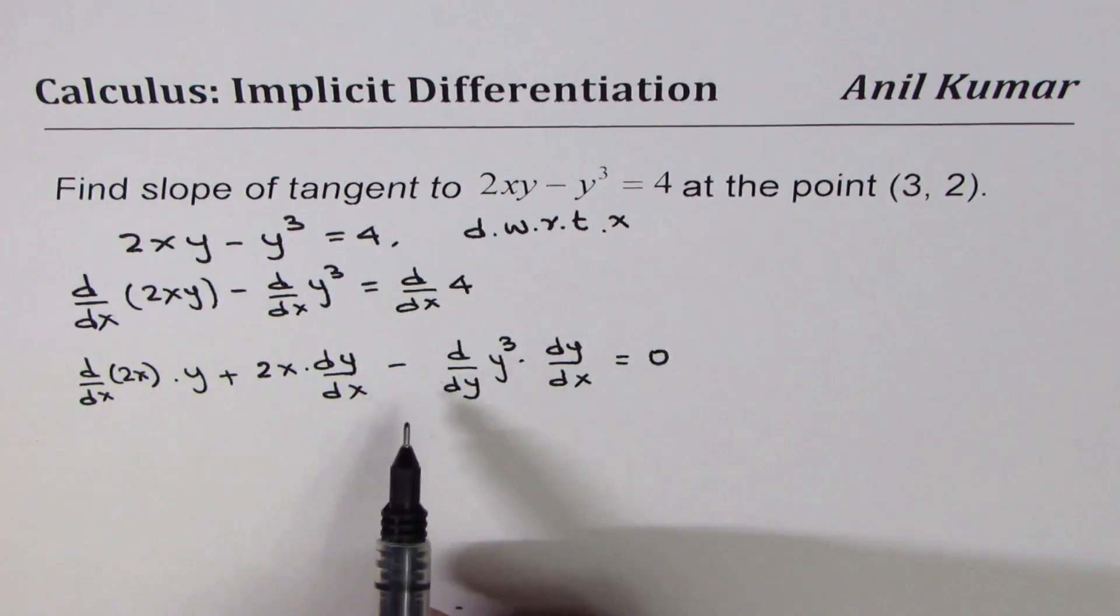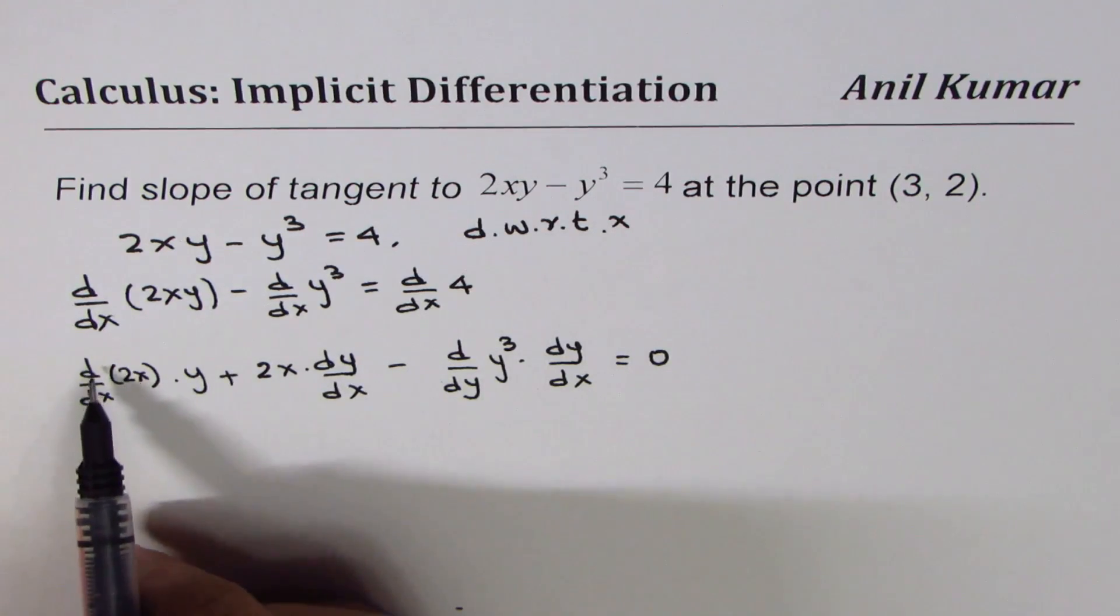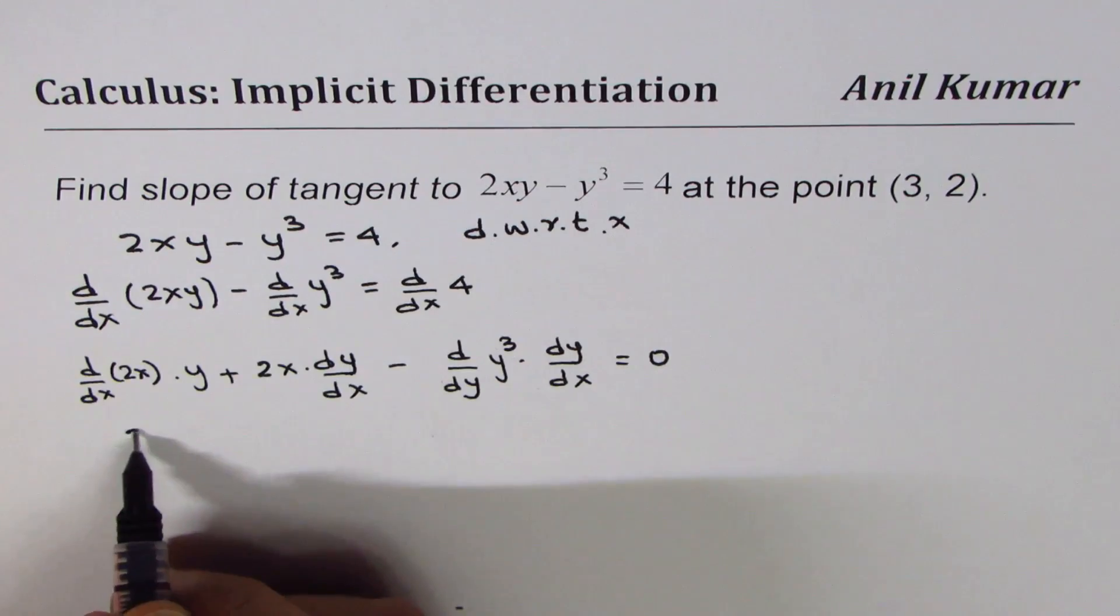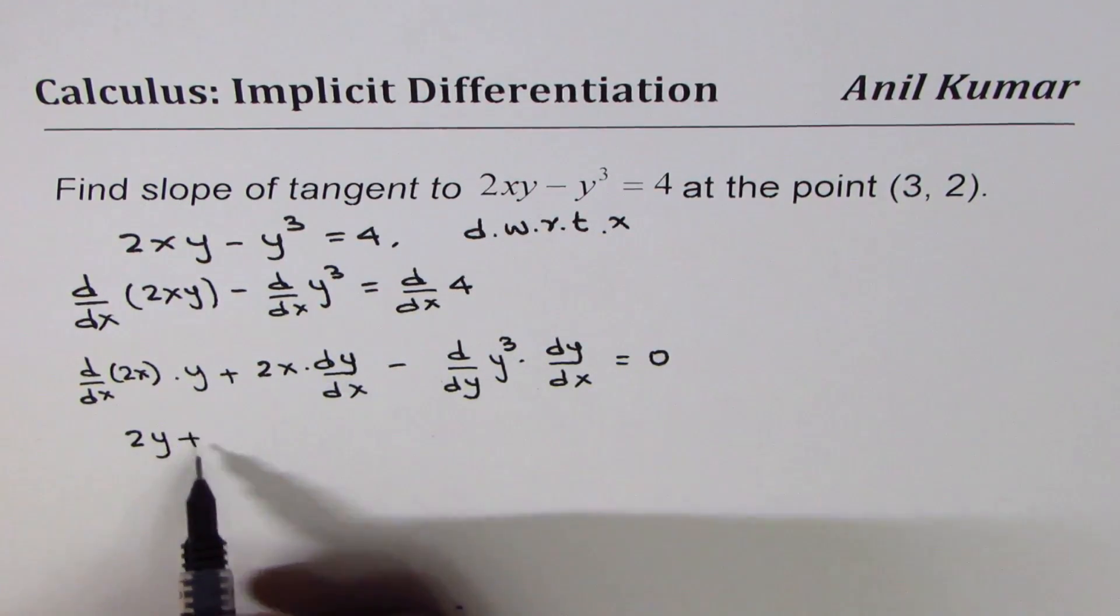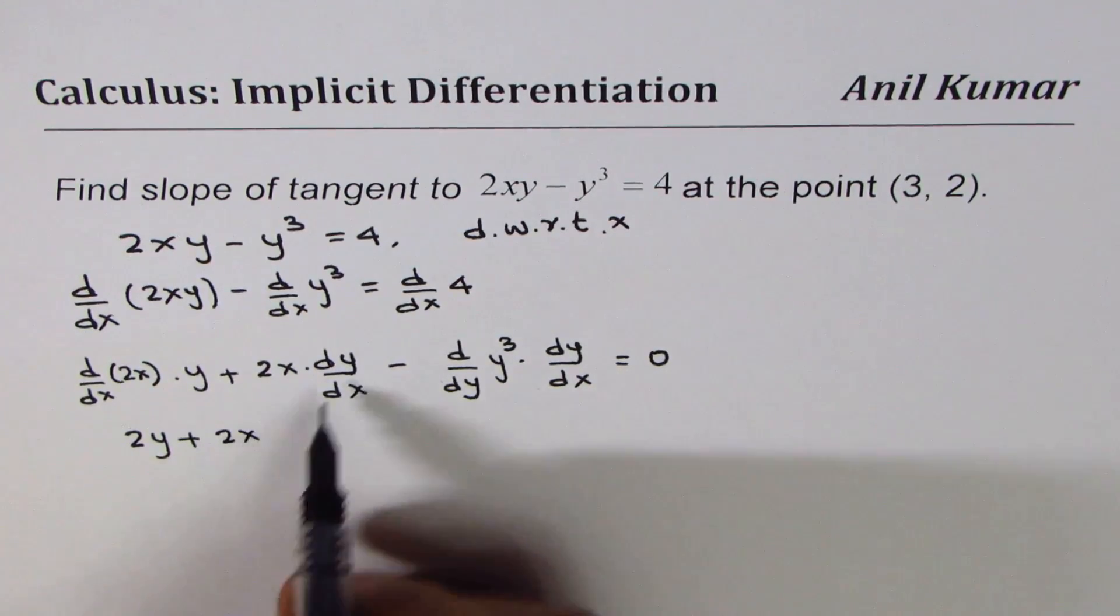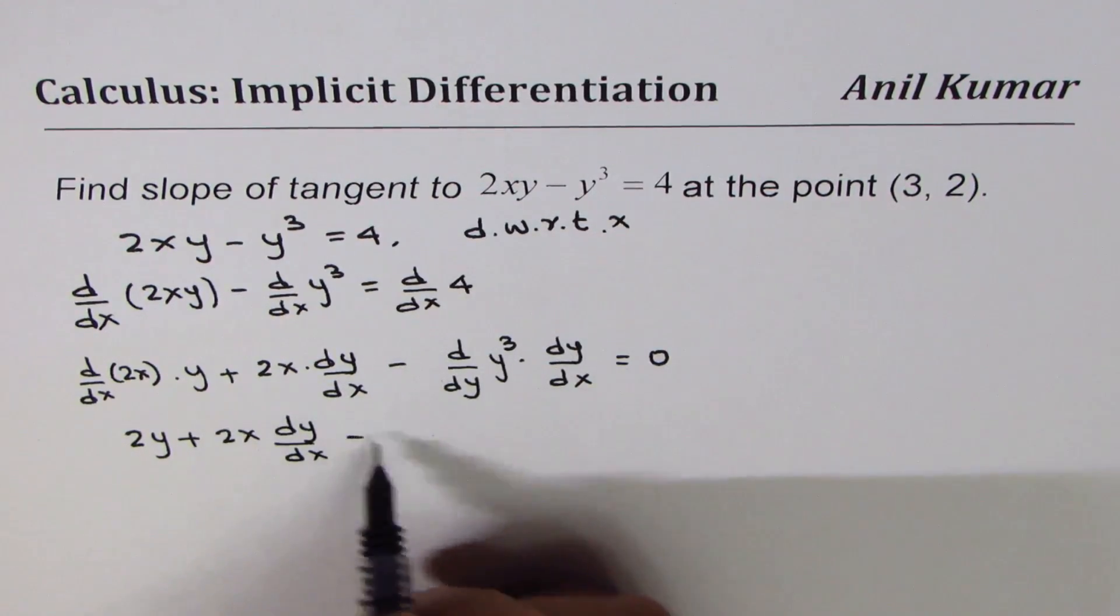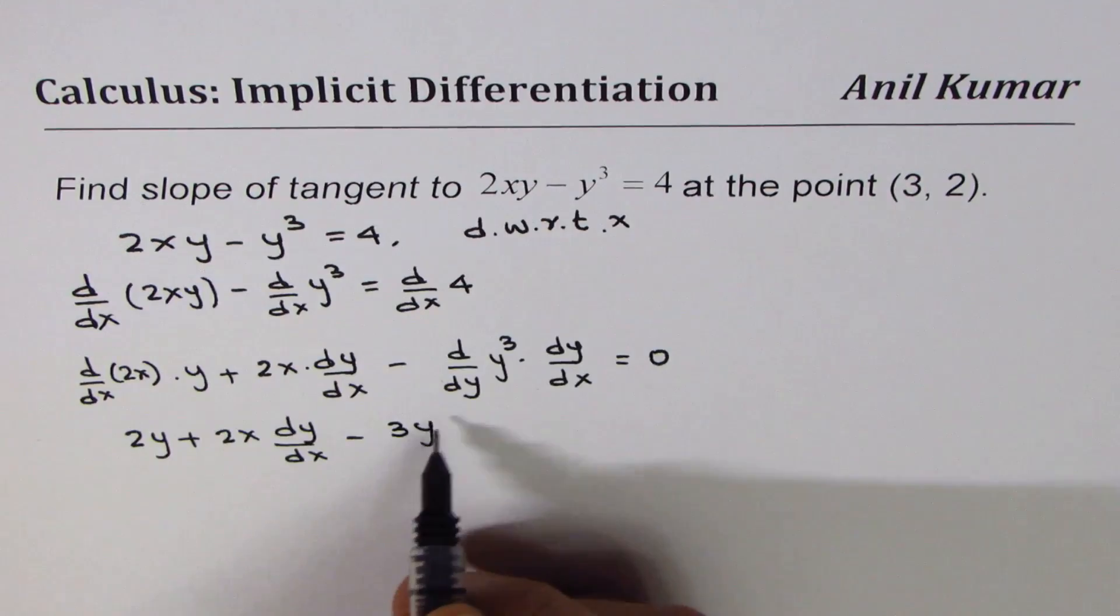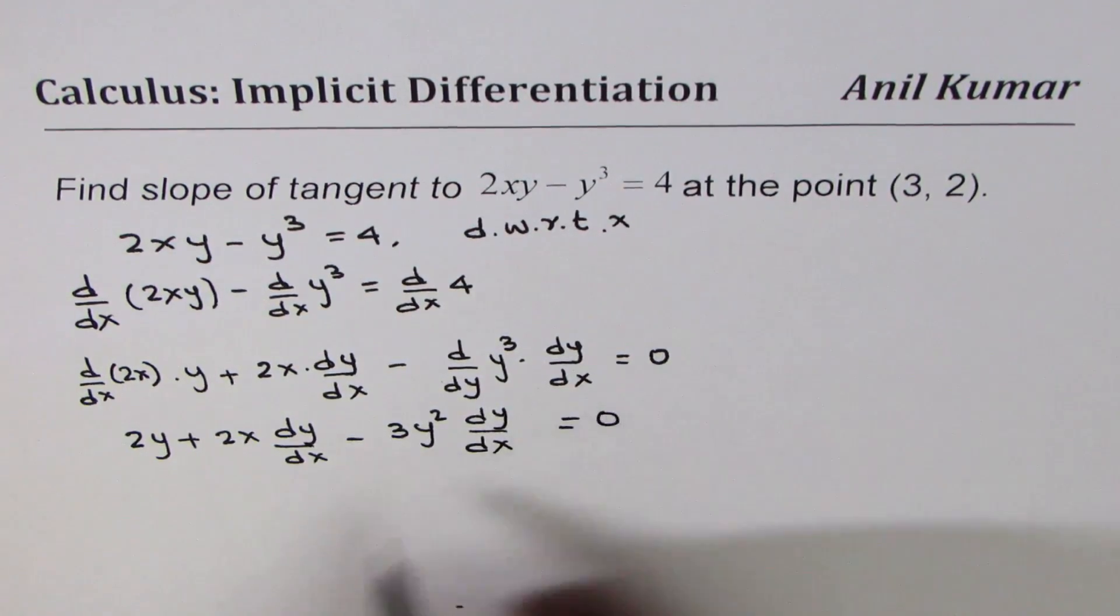Now we can factor dy/dx and find what dy/dx is. The derivative of 2x is 2, so we get 2y in the first term plus 2x dy/dx, minus the derivative of y³ with respect to y, which is 3y², and we have dy/dx equal to 0.